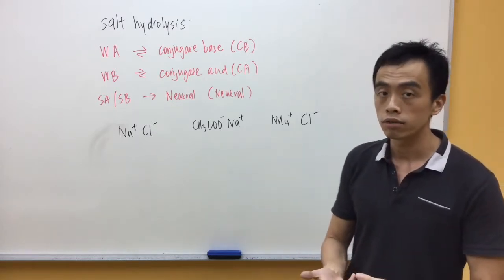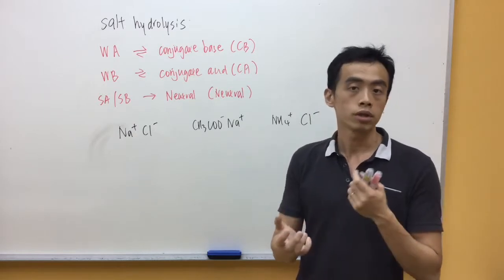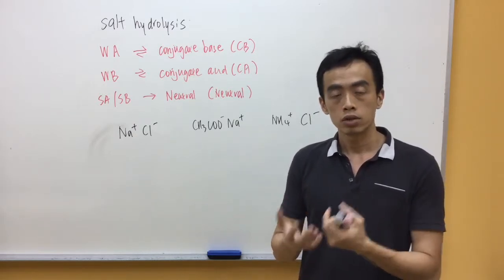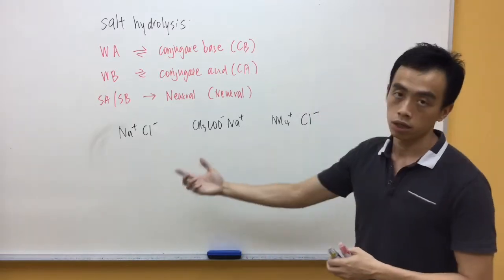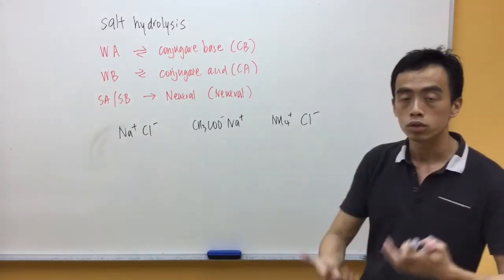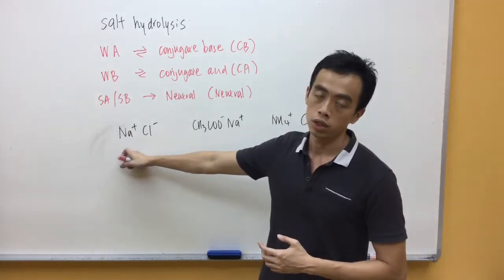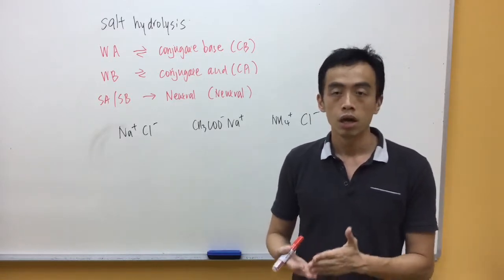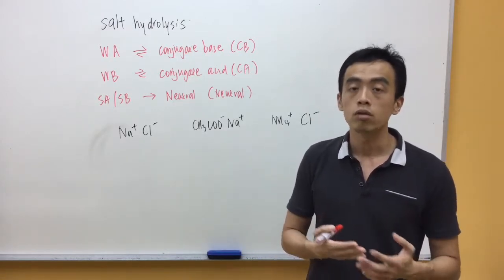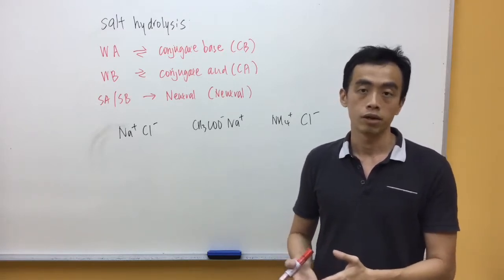One way of dealing with salt hydrolysis is to split the salt into its cation and anion and deduce the nature of each of the ions. We have examples of these three salts. How do we deduce the nature of each of these salts? One way to deal with it is we treat the salt as the product of an acid-base reaction and from the nature of the acid or base that forms this salt, I can deduce the nature of my ions.